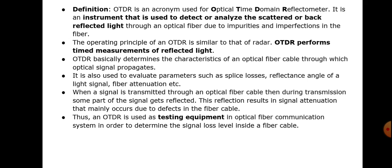Similarly, here we calculate the distance by using the time duration — the time taken between the sending and receiving of pulses. The OTDR performs timed measurements on the reflected light and basically determines the characteristics of an optical fiber cable through which optical signals propagate.